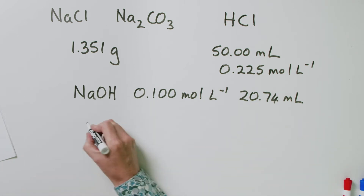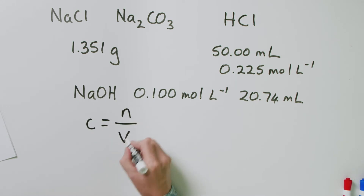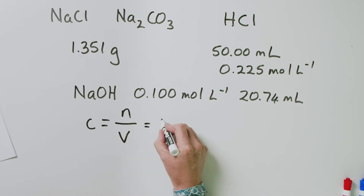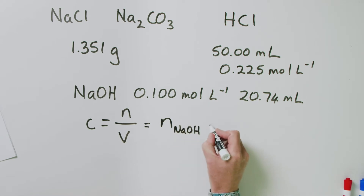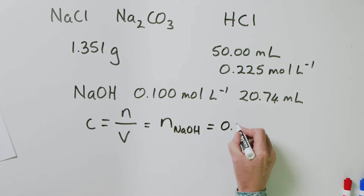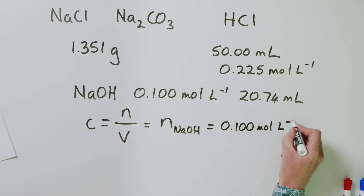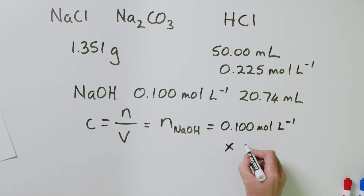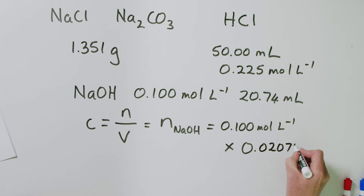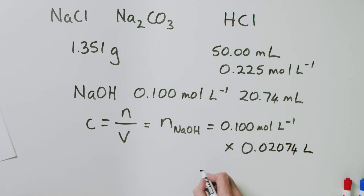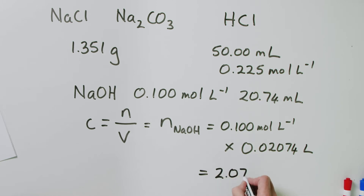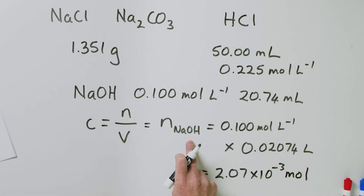We have a concentration and a volume for NaOH, and remembering c = n/V, we can calculate moles of NaOH: n(NaOH) = 0.100 mol/L × 0.02074 L = 2.07 × 10⁻³ mol of sodium hydroxide.